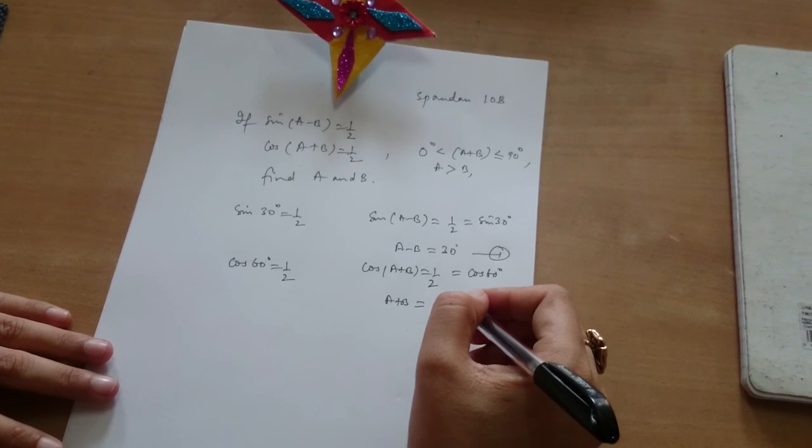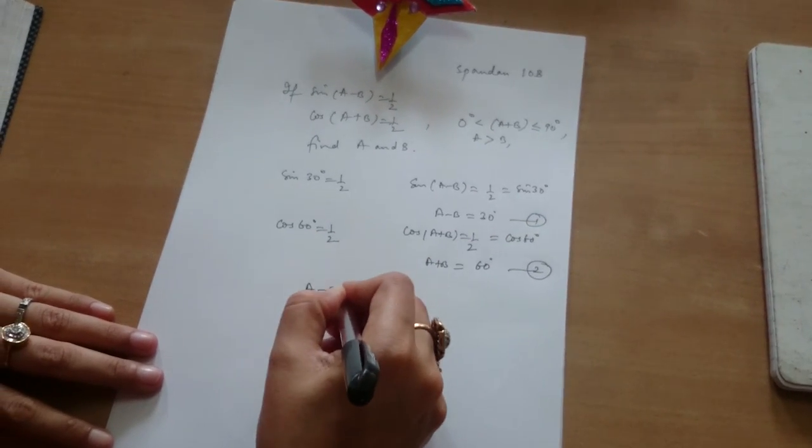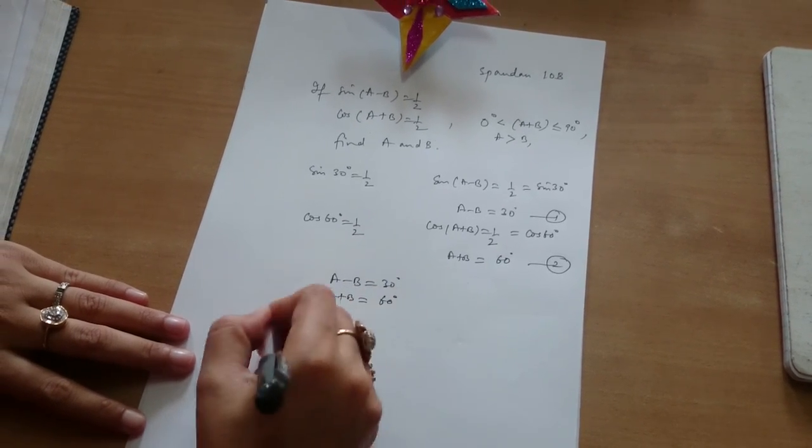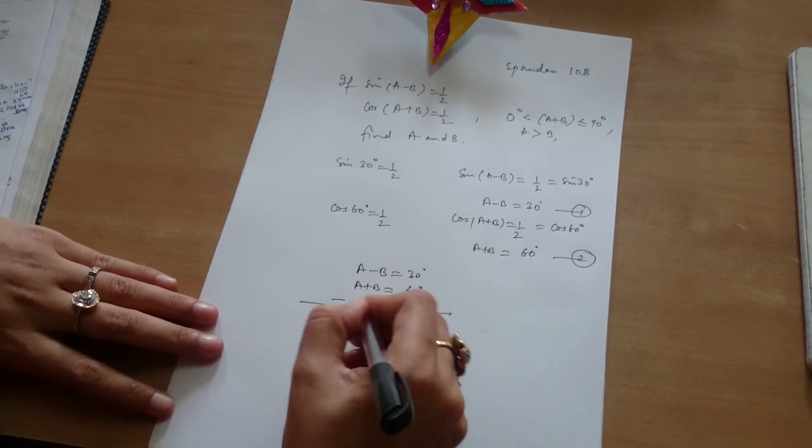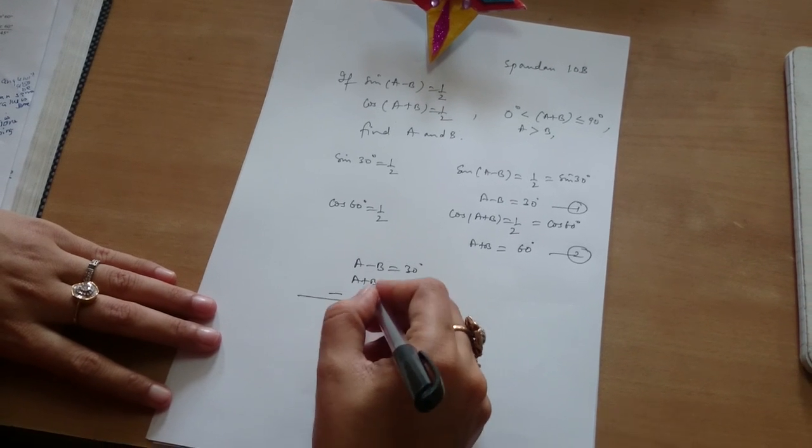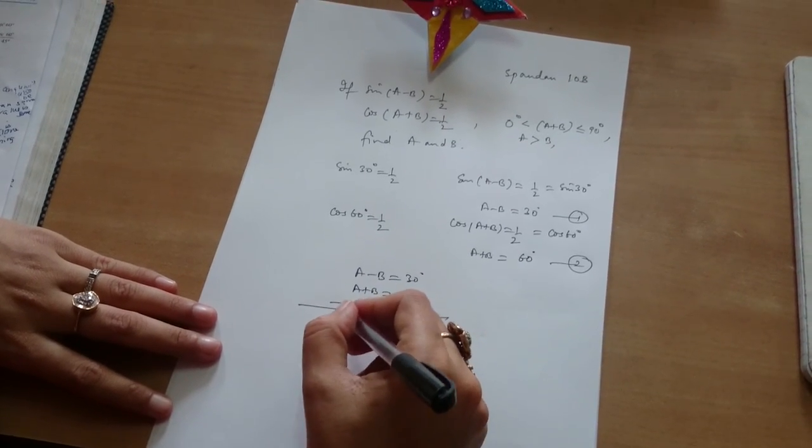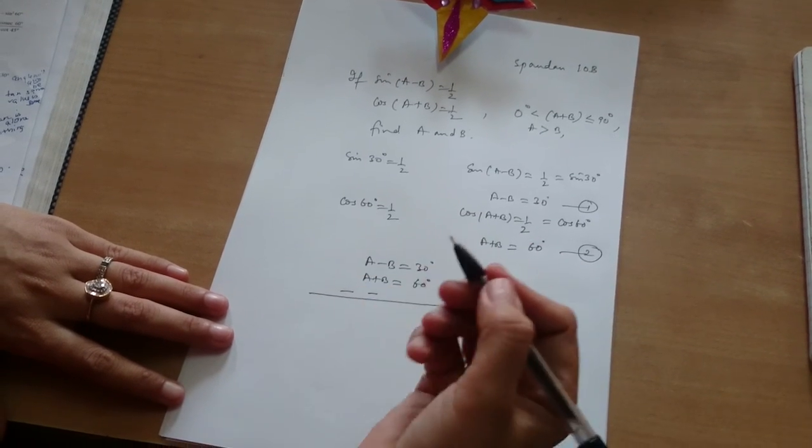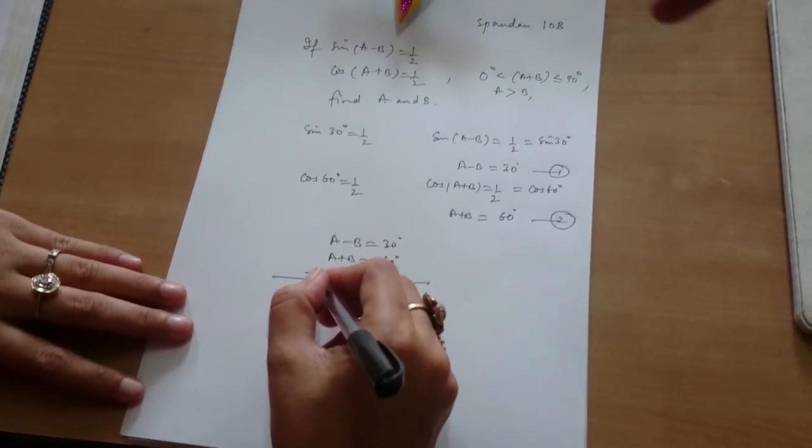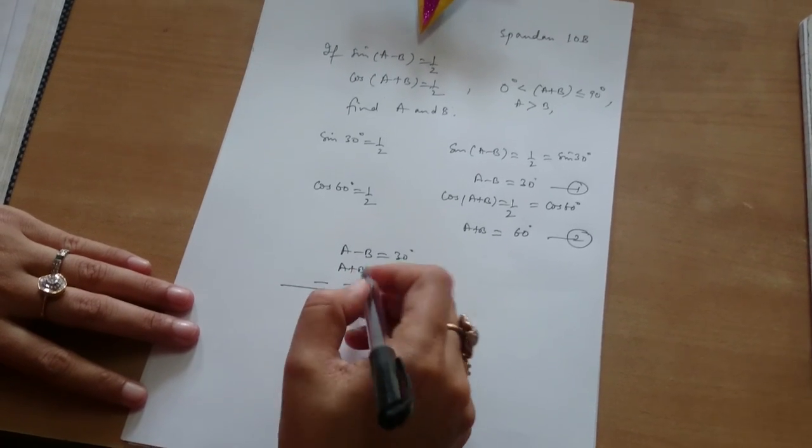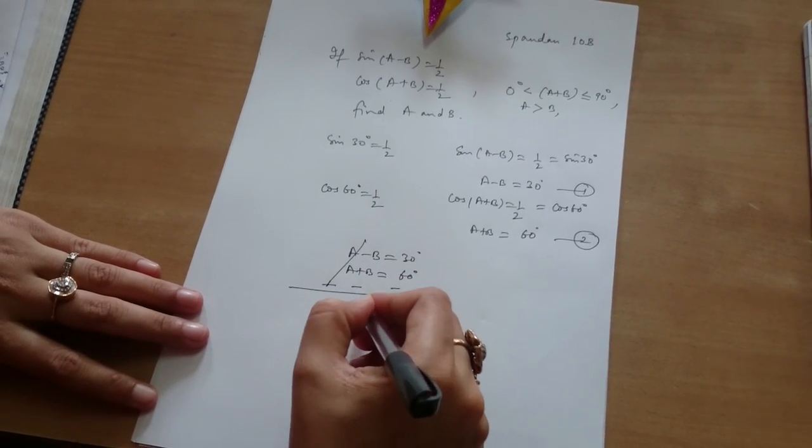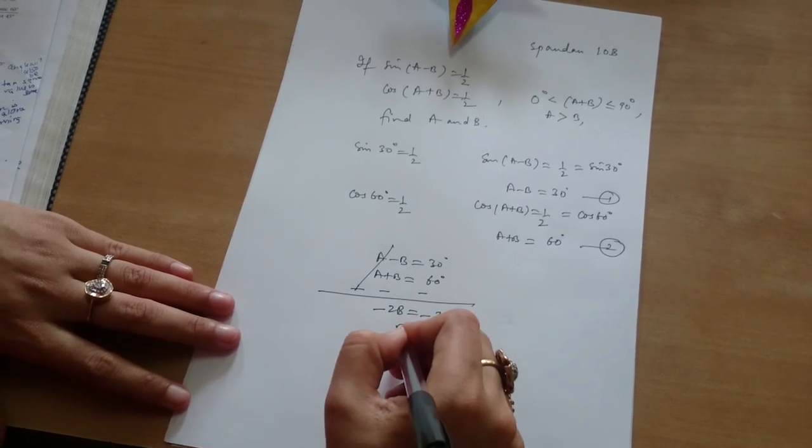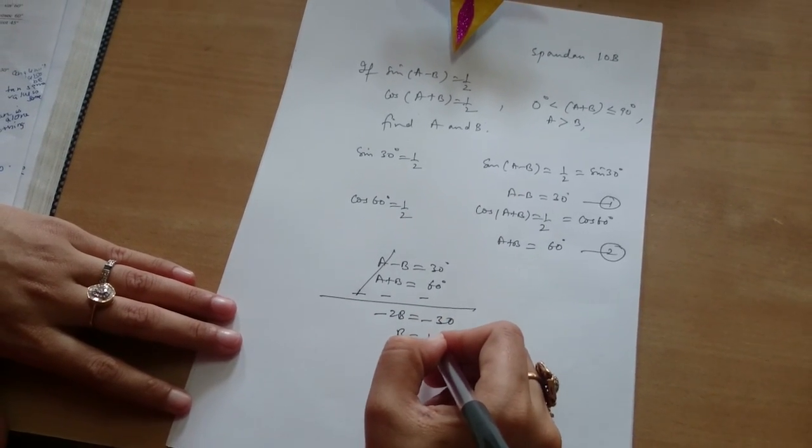Can you solve these two? Now, a minus b is 30 degrees and a plus b is equal to 60 degrees. Which method will you use for solving? By elimination method. If you change the sign, then a will get cancelled, and minus 2b is equal to minus 30 degrees. So b will be 15 degrees.